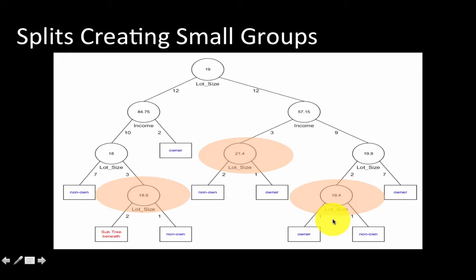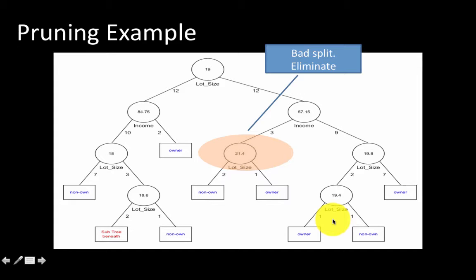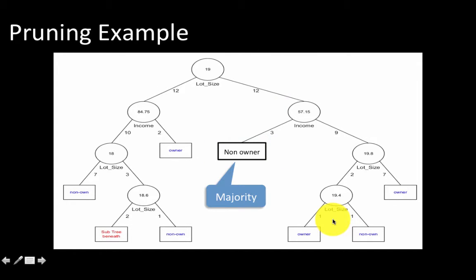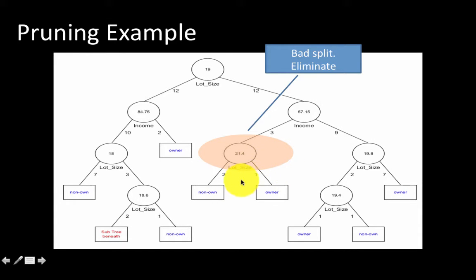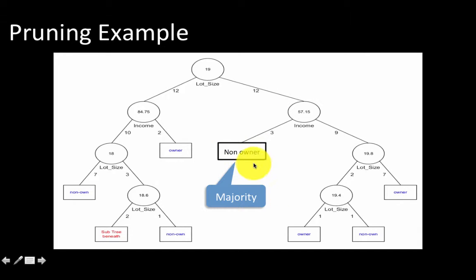You can eliminate this and simply combine it as non-owner, because in this case there are two non-owners and one owner. So if you combine them, you'll get a node with two non-owners and one owner and be classified as a non-owner based on majority. That's an example of how you might prune a tree and take its size back down a little bit so that it doesn't overfit and produce poor results.